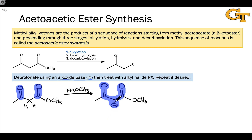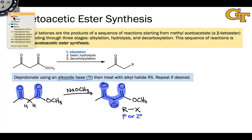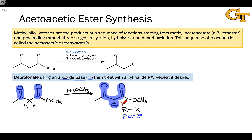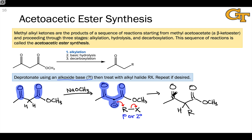Once we've done this, we want to install an alkyl group at the alpha carbon — the overarching goal of the entire acetoacetic ester synthesis. After treating the starting acetoacetic ester with base, we add a primary or secondary alkyl halide or pseudohalide. The process here is a simple SN2 reaction, just like the alkylation of an enolate we saw in the previous video. This installs the alkyl group at the alpha carbon between the carbonyl groups, accomplishing our overarching goal.